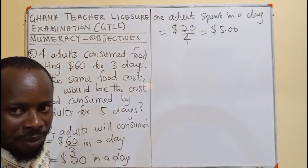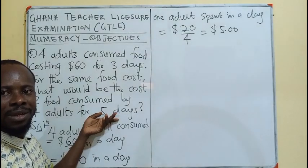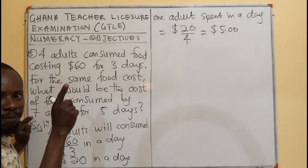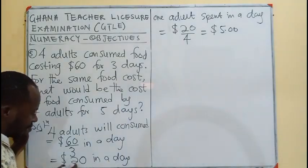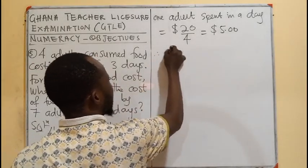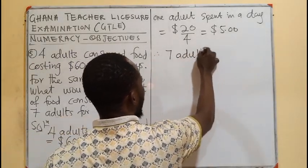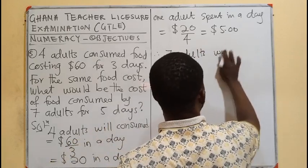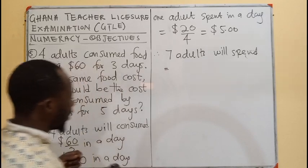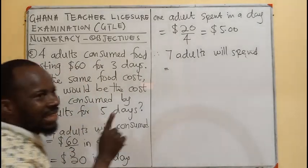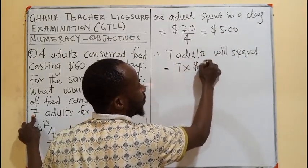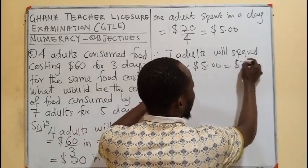They have increased the number of people and also the number of days. If they are 7 adults and one person is spending $5 per day, then 7 of them will spend 7 times $5, which gives us $35 in one day.